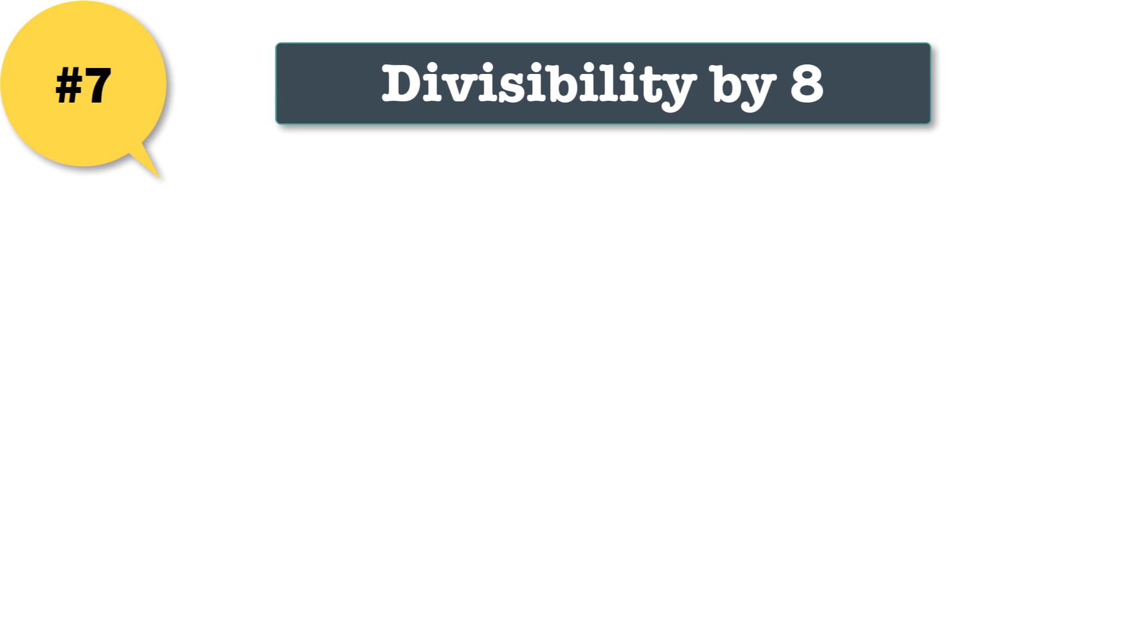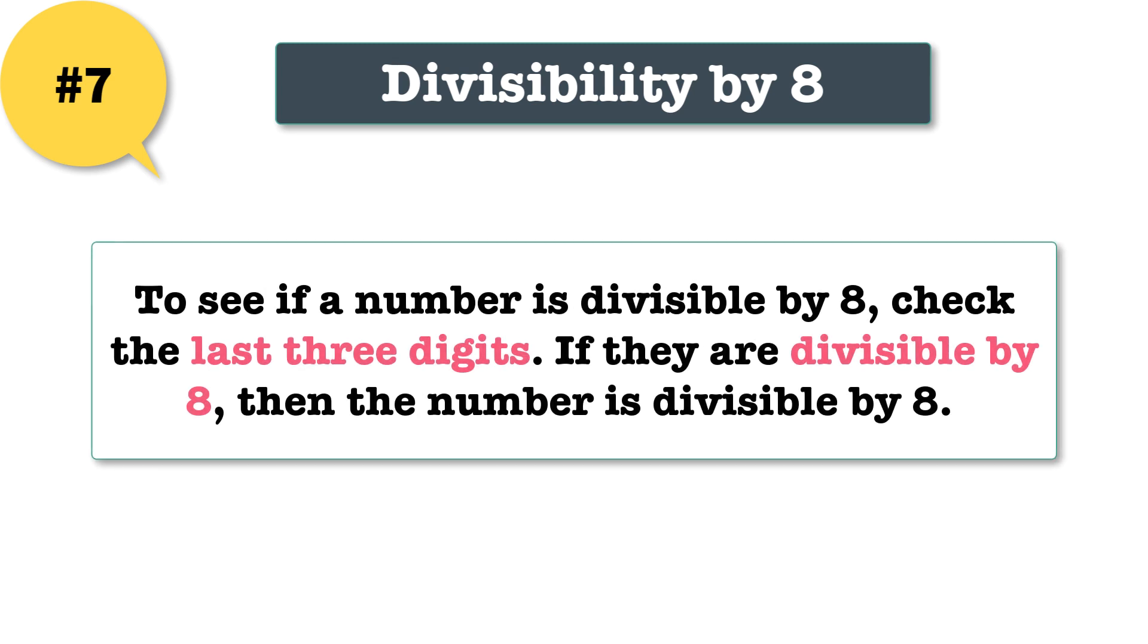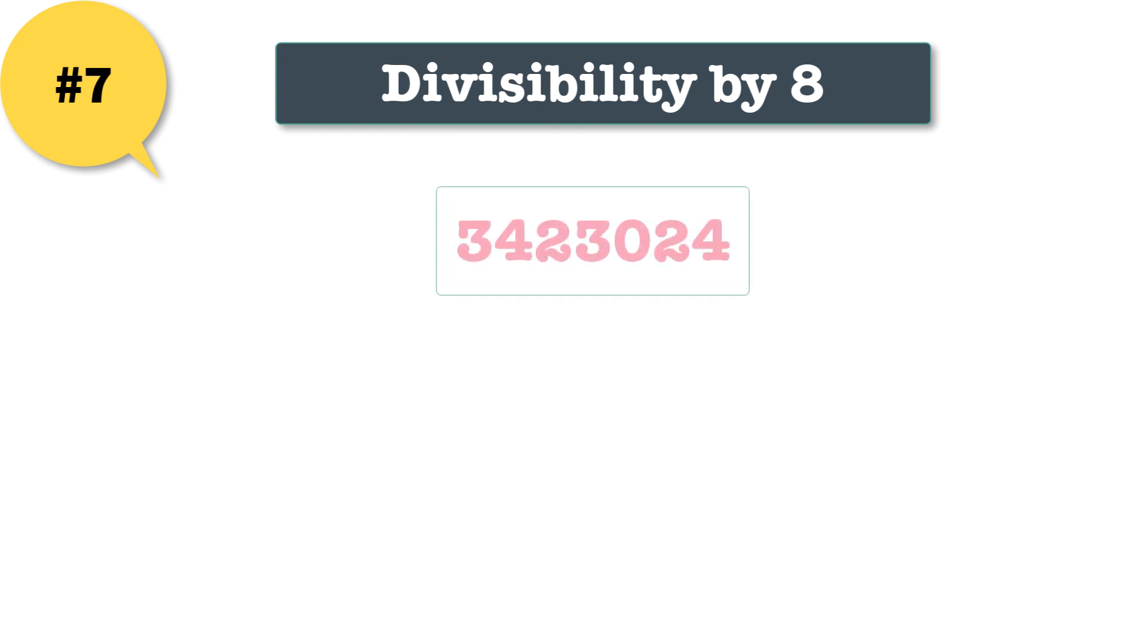Divisibility by 8. To see if a number is divisible by 8, check the last three digits. If they are divisible by 8, then the number is divisible by 8. In this example, this number would be divisible by 8 because the last three digits 024 is divisible by 8.